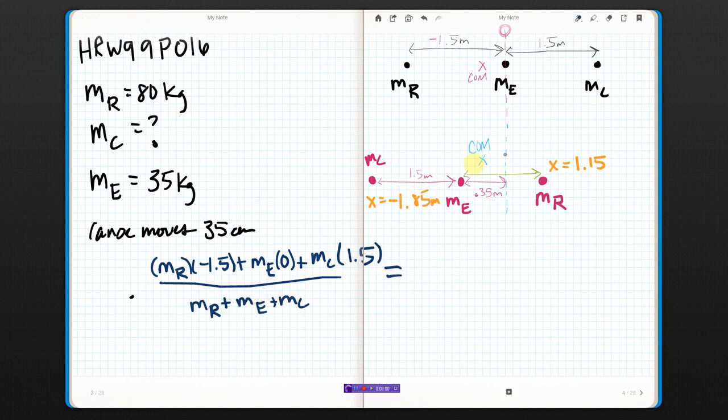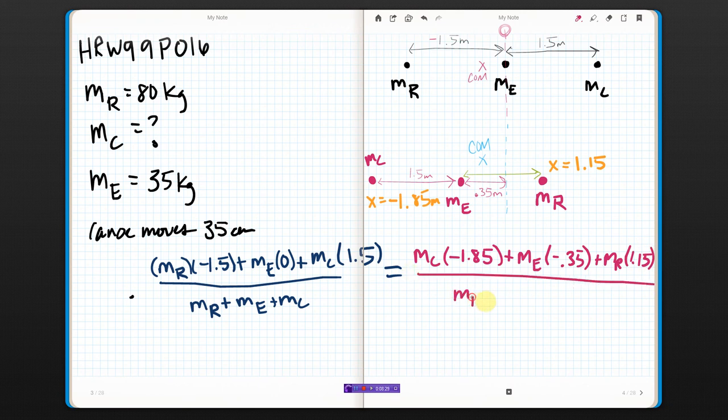Okay. That should be equal to the center of mass of the second one. So, I should be able to do the same equation, but for the center of mass of the second picture. So, this time, I've got the mass of Carmelita at a position of negative 1.85. Plus, the mass of the canoe at its position of negative 0.35. Plus, the mass of Ricardo at its position of 1.15. All over all of the masses put together. Now, this looks really horrible, but it's actually not that bad, because immediately looking at this, I have this on the bottom of both sides of the equation. So, they should actually just cancel out. So, they're just gone. All I have to deal with is the top portion.